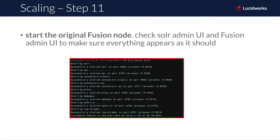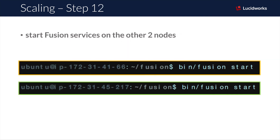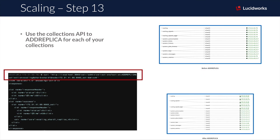I only had one node in my source implementation, so that's the one I'm starting on first. Check the Solr and Fusion admin UIs to make sure that there are no errors and that your object data is in place — that includes collections, pipelines, user roles, etc. At this point, your Solr data has not yet been replicated to the new Fusion nodes. Once you can confirm that everything is working as it should, start the Fusion services on the rest of your Fusion nodes.